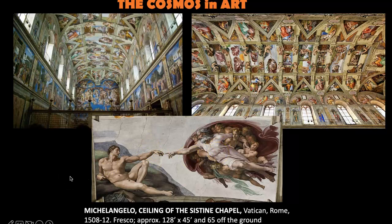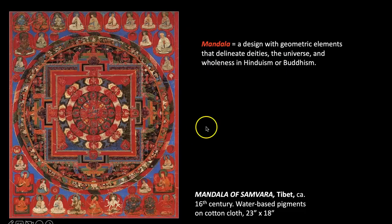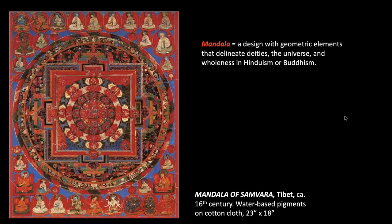Pivoting to a different part of the world, let's head to Tibet and take a look at the Mandala of Samvara. The Mandala of Samvara was created around the same time in the 16th century, rendered in water-based pigments on cotton cloth. It measures quite a bit smaller at about 23 inches by 18 inches. A mandala, as you see in the definition above, is a design with geometric elements that delineate deities, the universe, and wholeness in Hinduism or Buddhism.